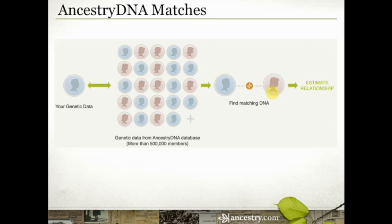Remember my banana? Human beings share approximately 50% of their DNA with a banana — that seems kind of ridiculous, but there it is. Human beings also share about 99% or more of their DNA with other human beings. So what our scientists are looking for when they make this comparison is the difference: what do we have in common just because we're human beings, or European, or from the same region — versus what do we have in common because we inherited it specifically from a recent common ancestor?